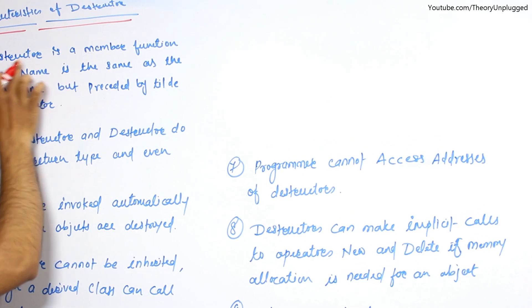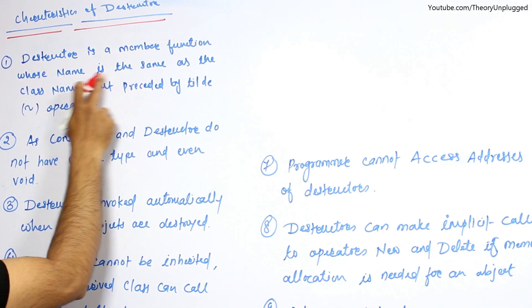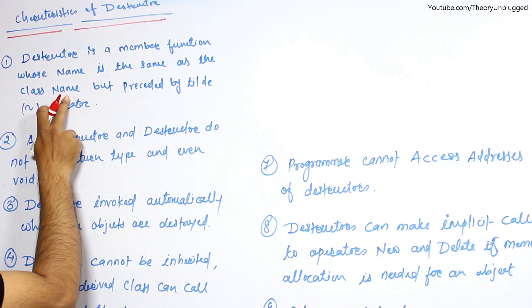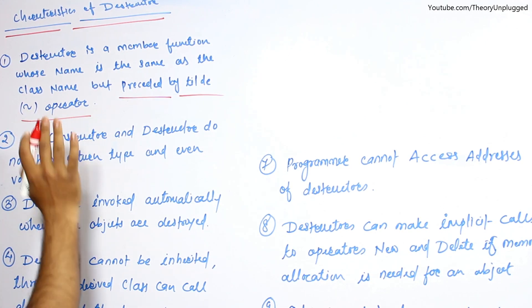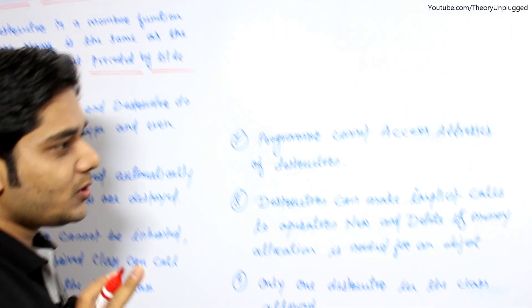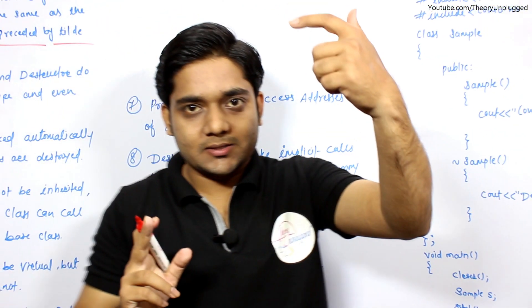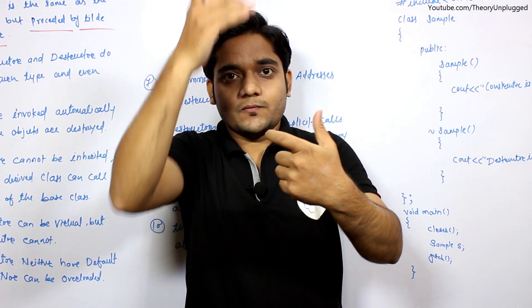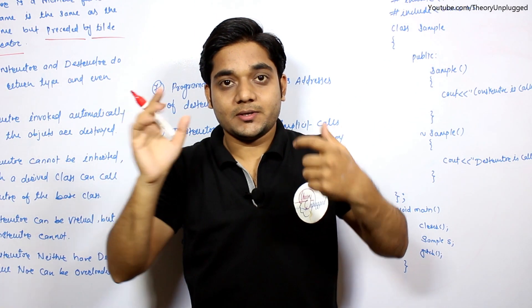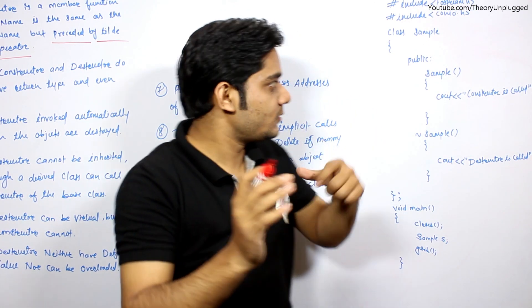Destructor is a member function whose name is the same as the class name, but preceded by tilde operator. So first point, the function name is the same as the class name, but it will appear with tilde operator.